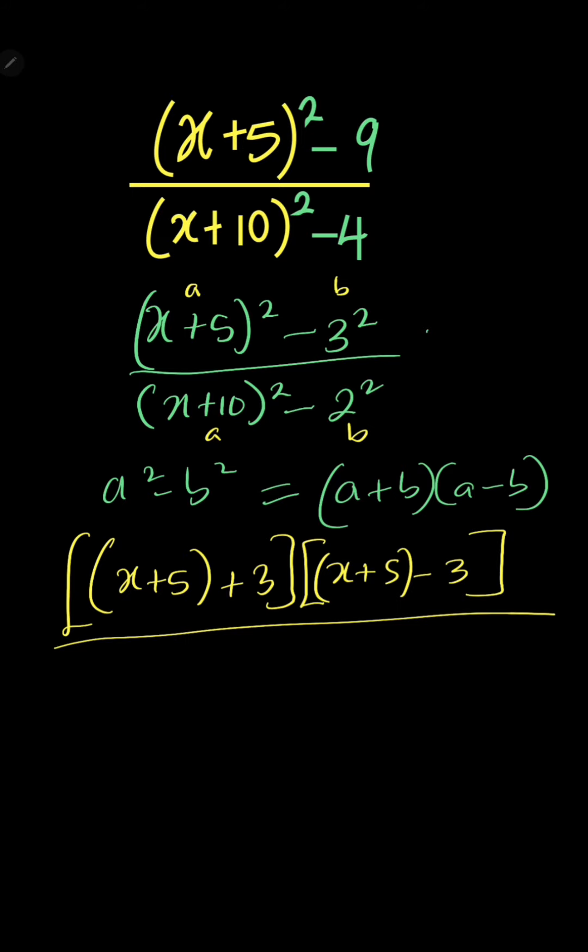All over in the denominator you will have (x+10) which is a, minus b being 2, multiplied by (x+10) which is a, plus b. Okay, I started with plus, then here will be minus 2.